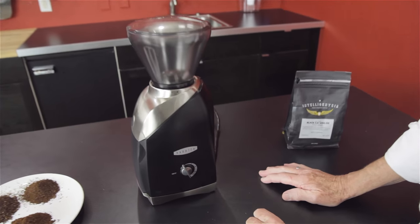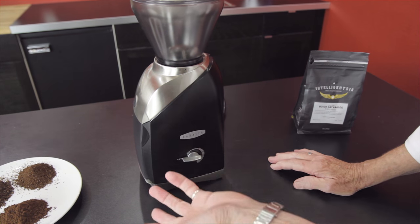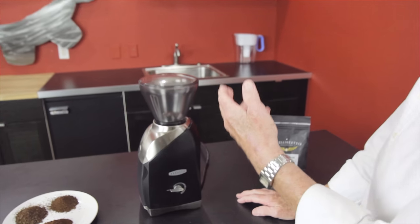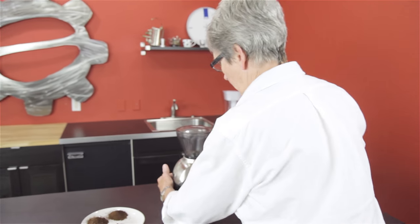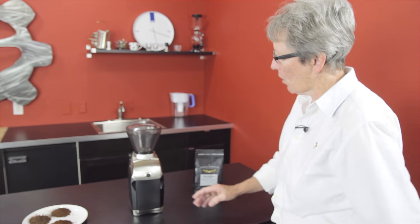Timer switch on the side. And you can see that going backwards. And these marks, they don't really equate to anything as far as cups, minutes, anything like that. So that's the Virtuoso.